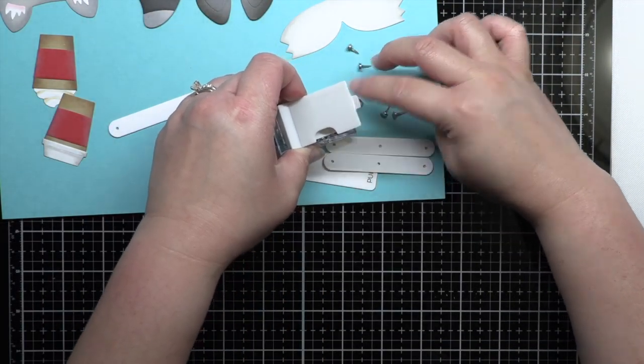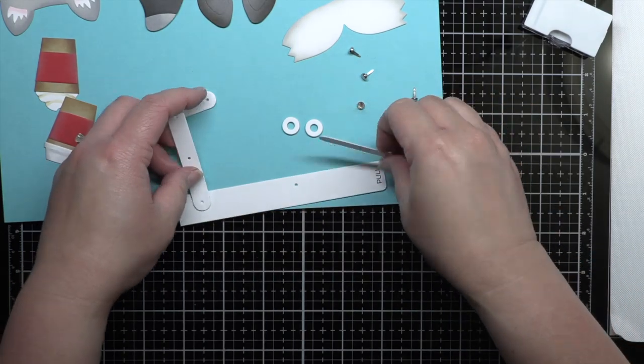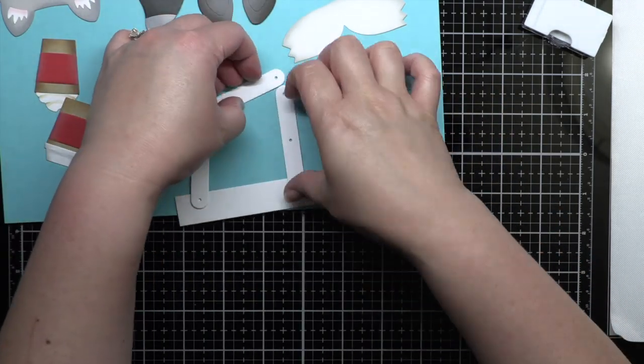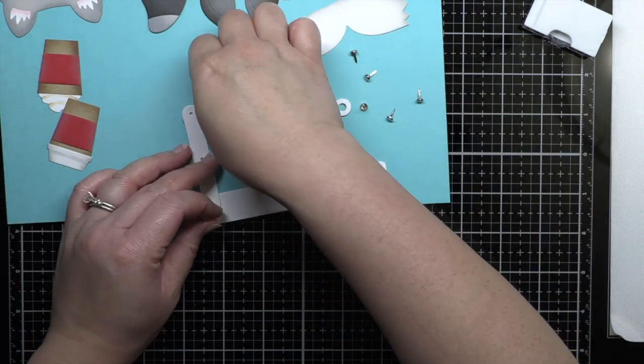Next, it was time to assemble the twist and turn mechanism. I used mini brads to attach the mechanism together, and gave it a quick pull to make sure it would move smoothly.